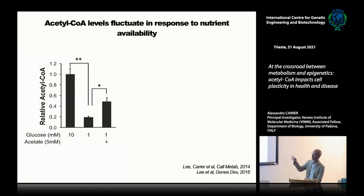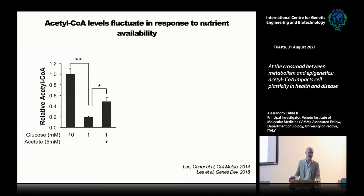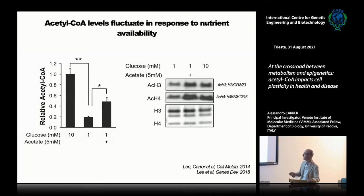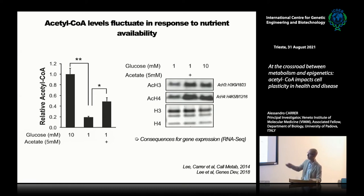In a simple experiment, we cultured glioblastoma cells in high or low glucose conditions and measured acetyl-CoA directly by mass spectrometry. Acetyl-CoA levels really drop when glucose is limiting in the medium, and they go back up when we add supraphysiological doses of acetate — an alternative source of acetyl-CoA. Importantly, these fluctuations go side by side with changes in global levels of histone acetylation: when acetyl-CoA levels are high, histone acetylation is high; when low, histone acetylation is reduced. These changes have consequences for gene expression, as shown by RNA-seq.